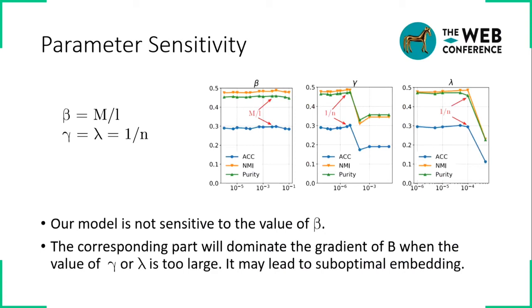Regarding the parameters of the multi-graph regularization gamma and clustering loss lambda, they contribute to the gradient of b, which is relevant to the size of dataset n, where we set gamma and lambda to 1 over n. We observed that the gamma and lambda have sharp drops in the performance after a certain value. Intuitively, both of them control the contribution of graph regularization and binary clustering, respectively. The corresponding part will dominate the gradient of B when gamma and or lambda is too large. It may lead to suboptimal embedding.